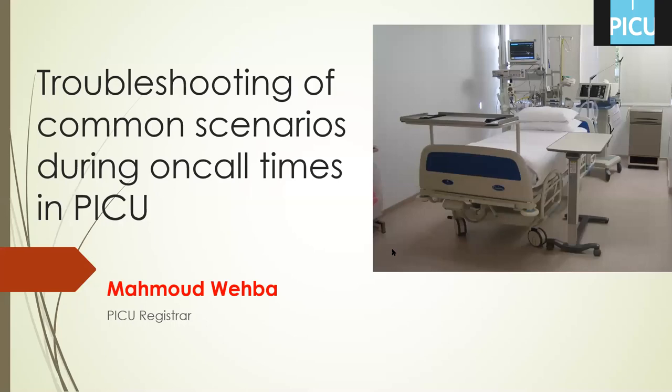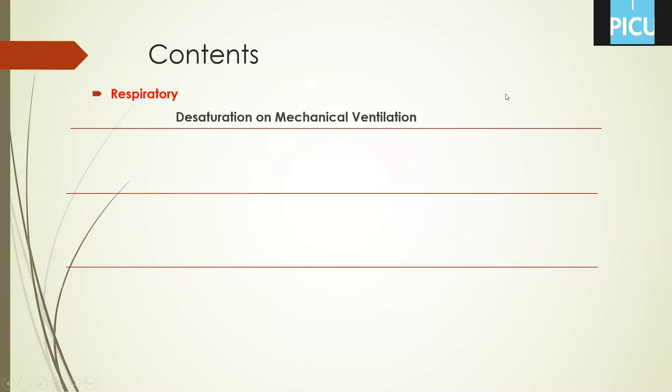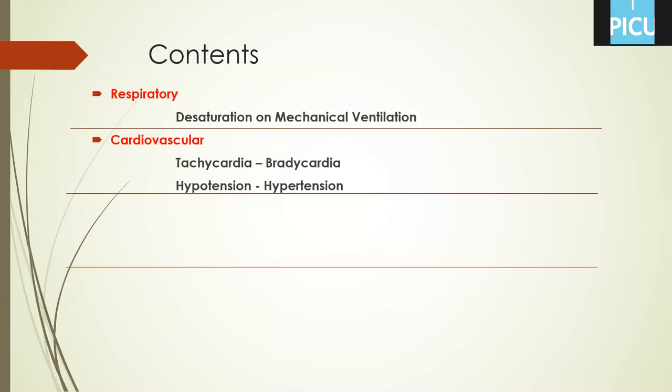The first is respiratory issues: causes of desaturation on mechanical ventilation — what causes are expected and how to manage. Then cardiovascular problems: pulse abnormalities, blood pressure abnormalities. Then CNS problems like increased intracranial pressure, suspected brain herniation, and fluid balance.